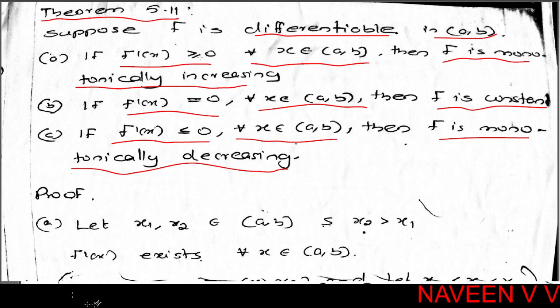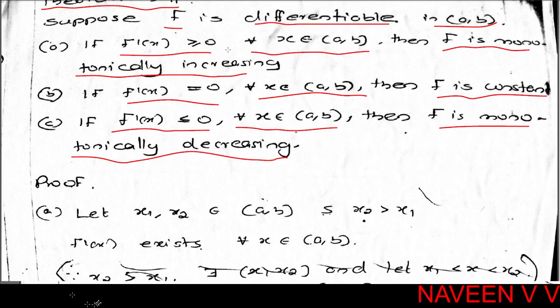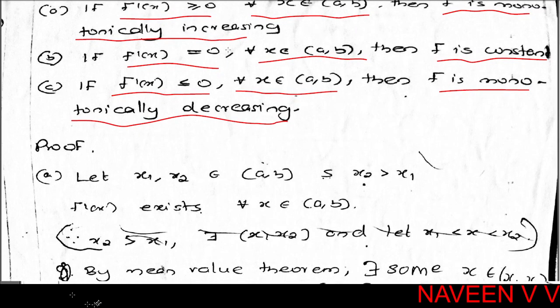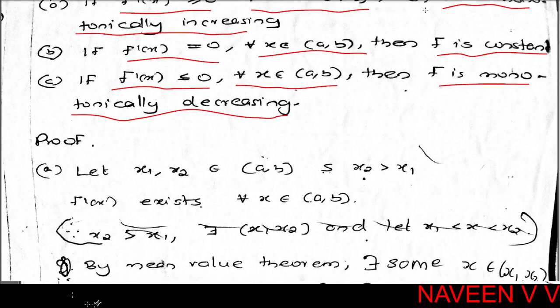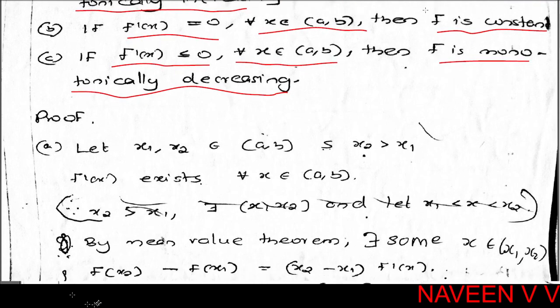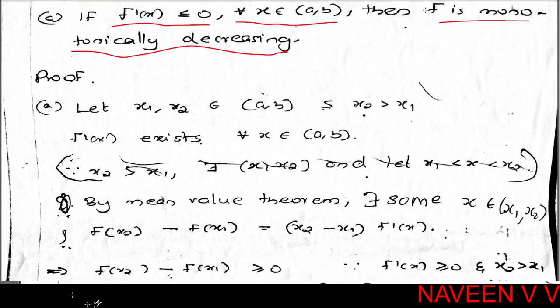The common condition is: on open interval (a, b), function f is differentiable. Now we will prove each part. For the first case: f'(x) ≥ 0 for all x in open interval (a, b). We need to prove that f is monotonically increasing.